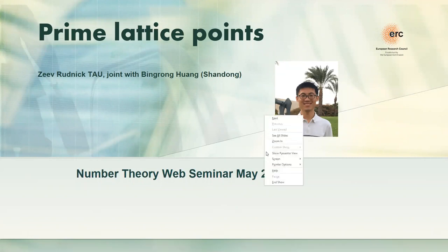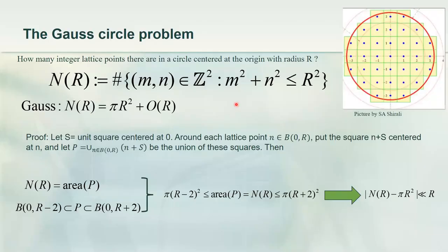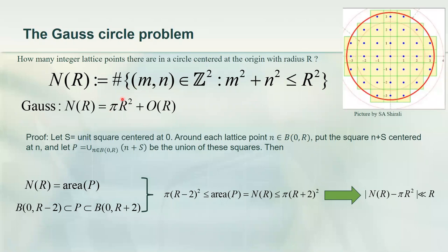Let's start with the famous Gauss lattice point problem. This is the question of: if I give you a large disk, how many lattice points does this disk contain? The standard guess is that the number of lattice points is roughly the area of the disk. The asymptotic parameter is the radius, and in the limit of large radius, you want the number of lattice points to be asymptotically equal to the area of that disk, which is π r squared.